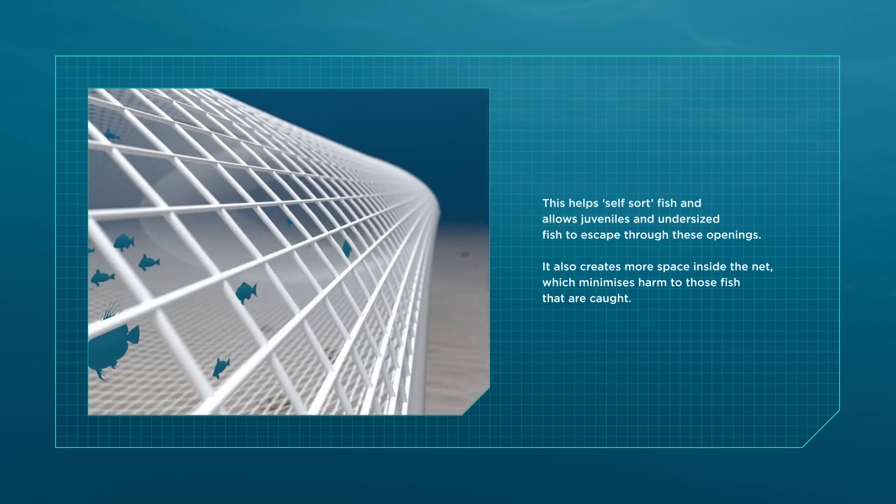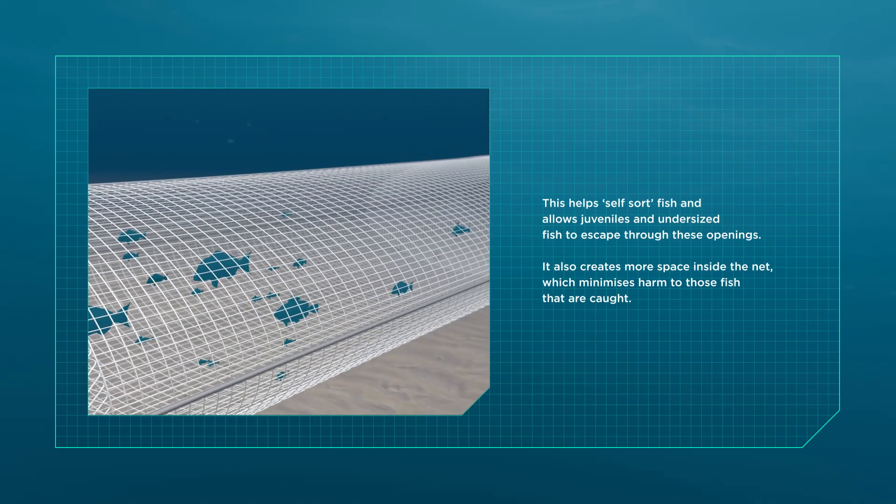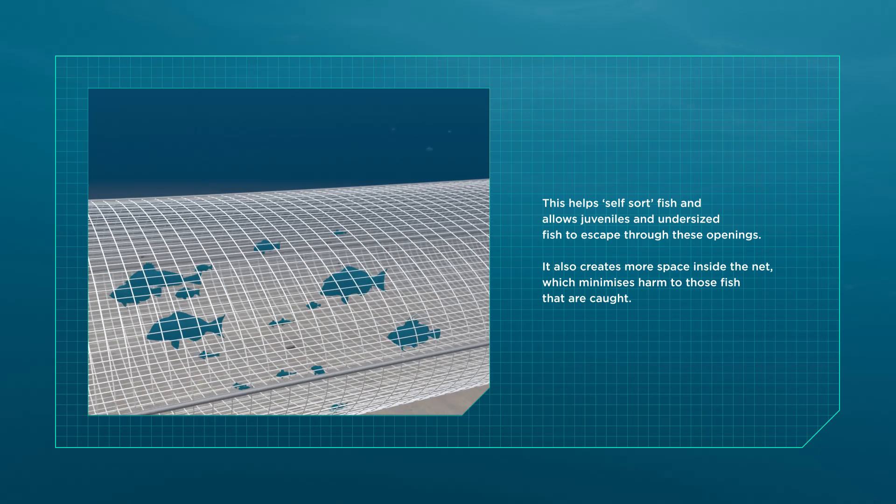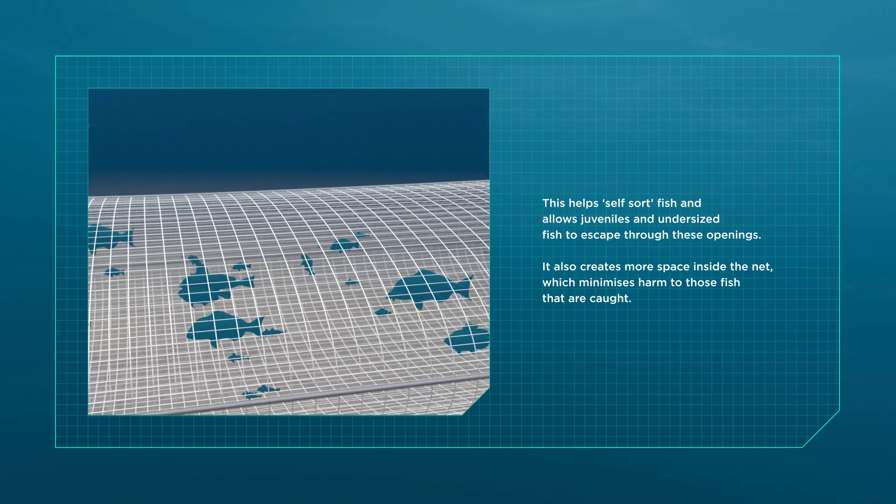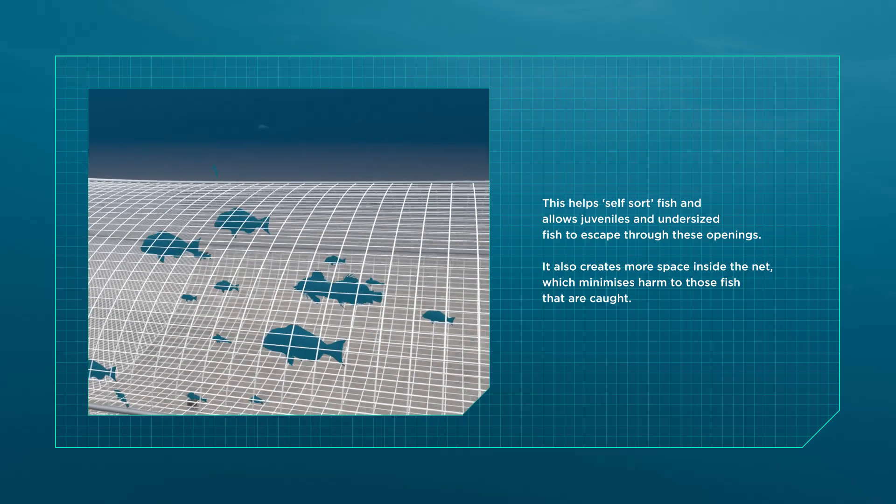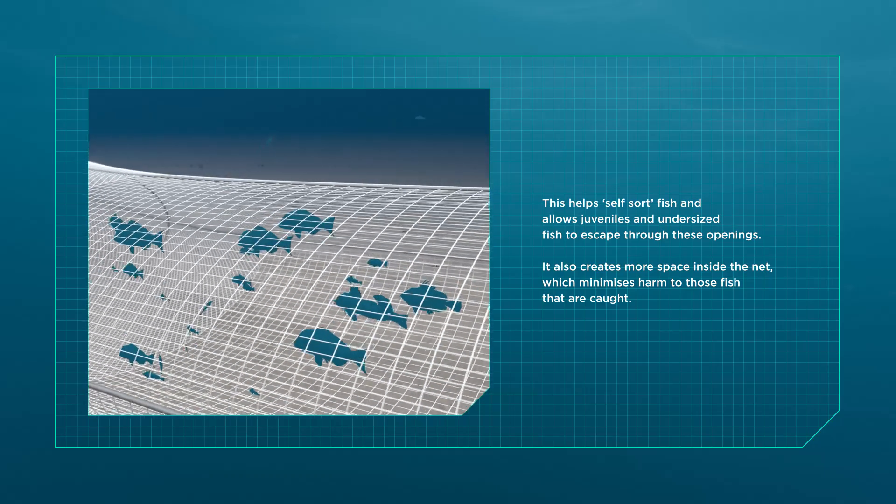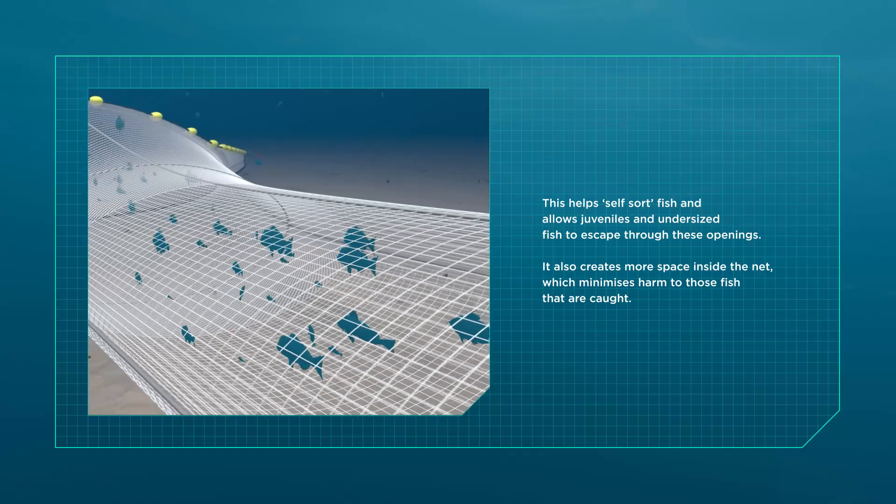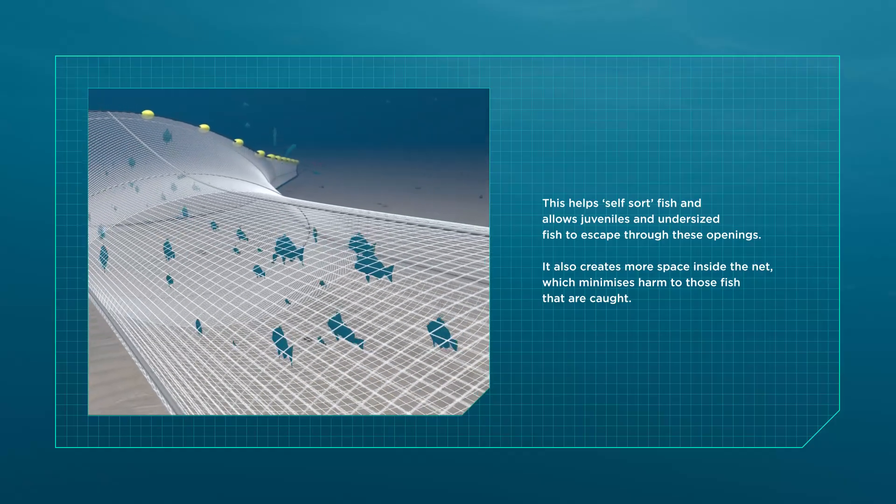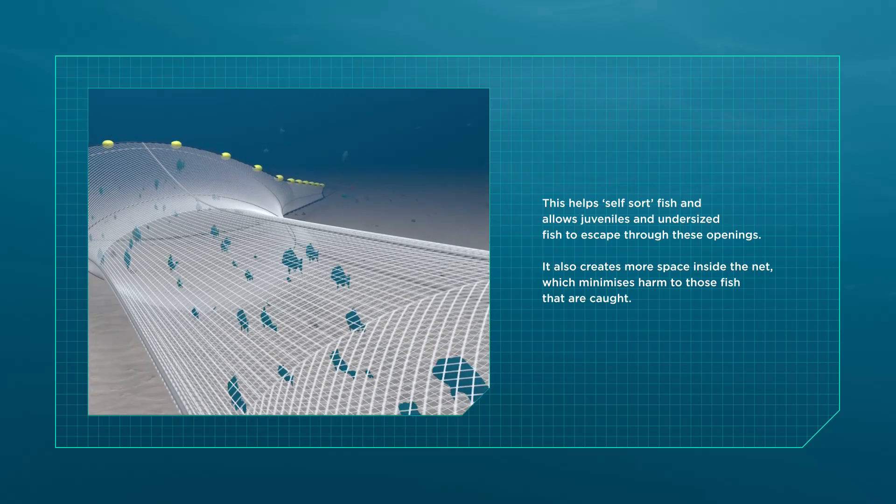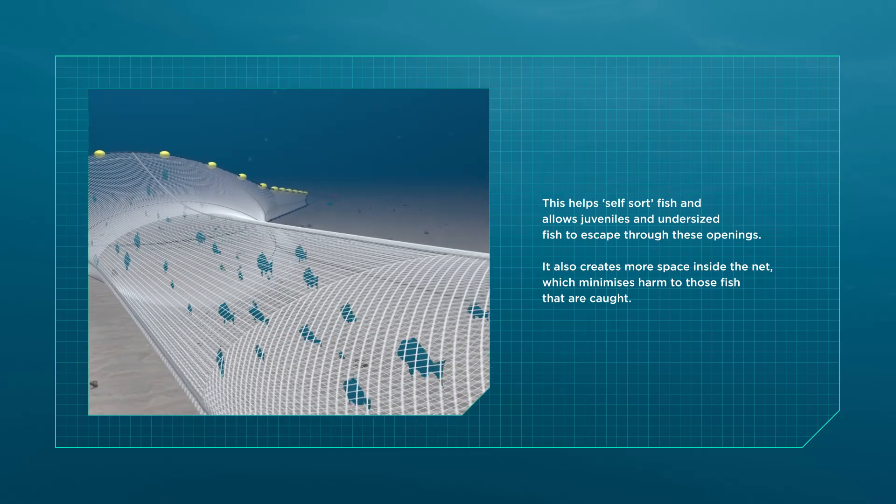The goal here is twofold. Firstly, these larger openings help to self-sort fish of the right size before they reach the boat. Smaller, juvenile fish can escape through these openings in the net to mature and spawn and keep population numbers healthy. And secondly, these openings allow better water flow into and through the net, creating more space and minimising harm to the fish that are caught.